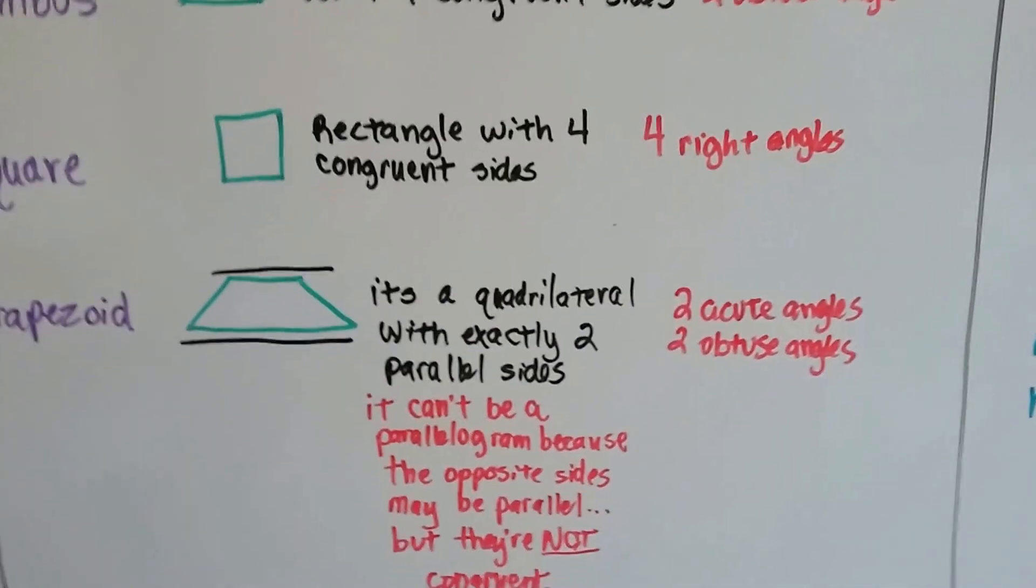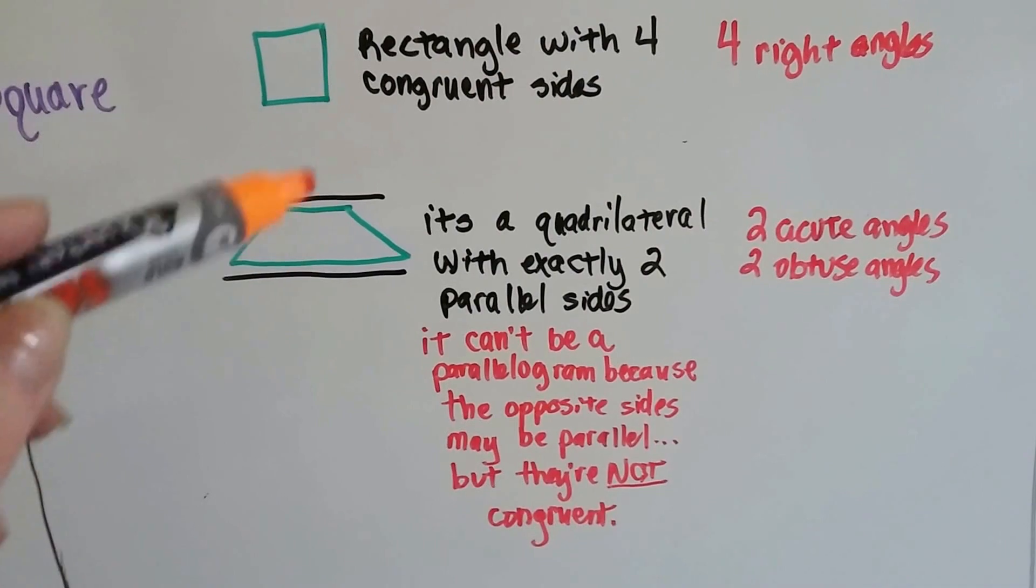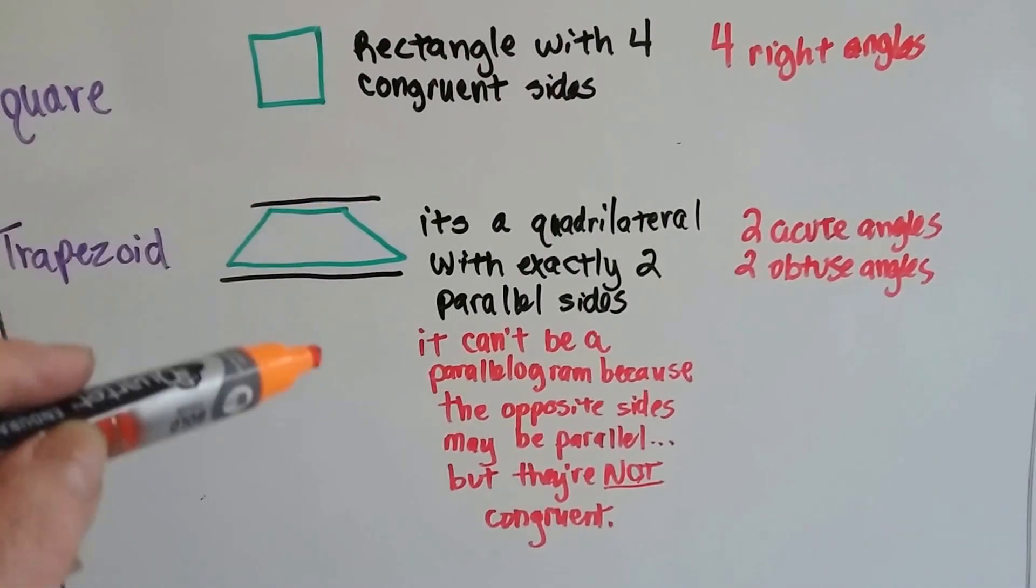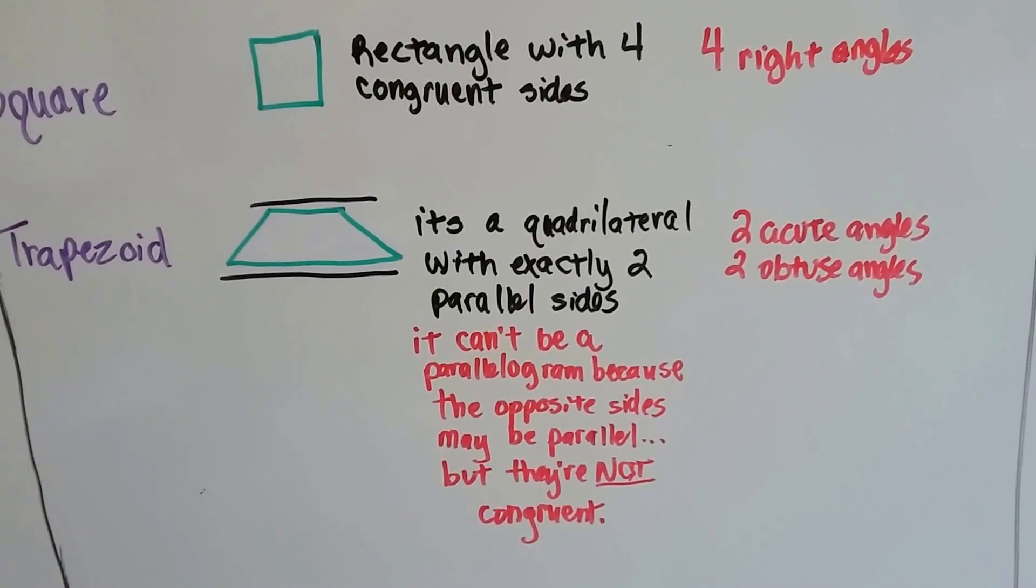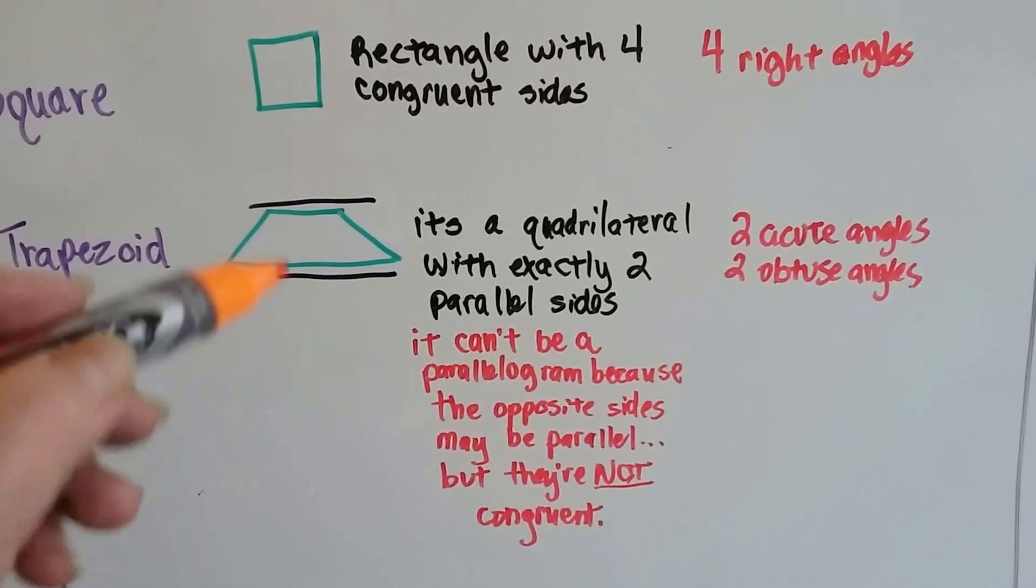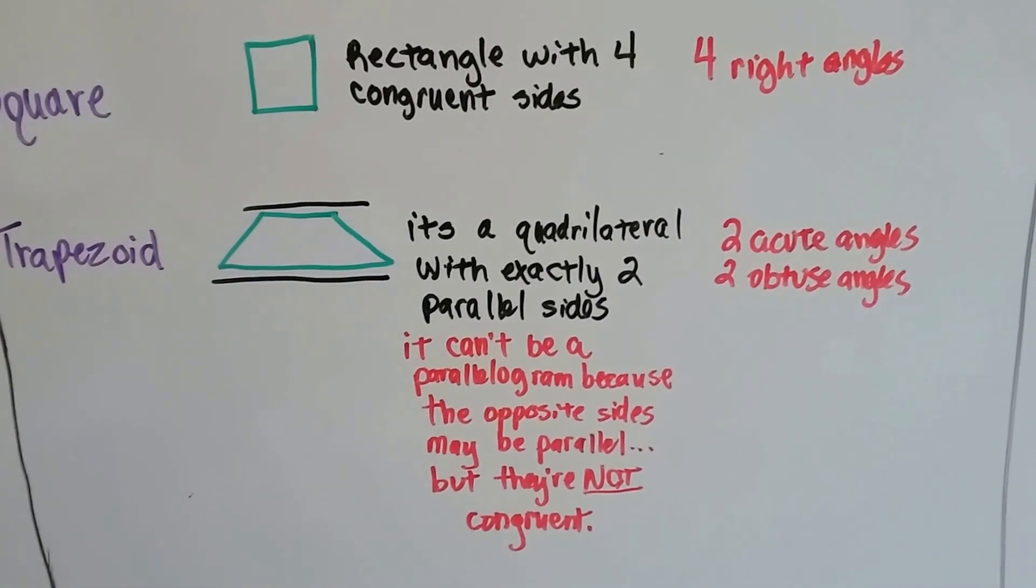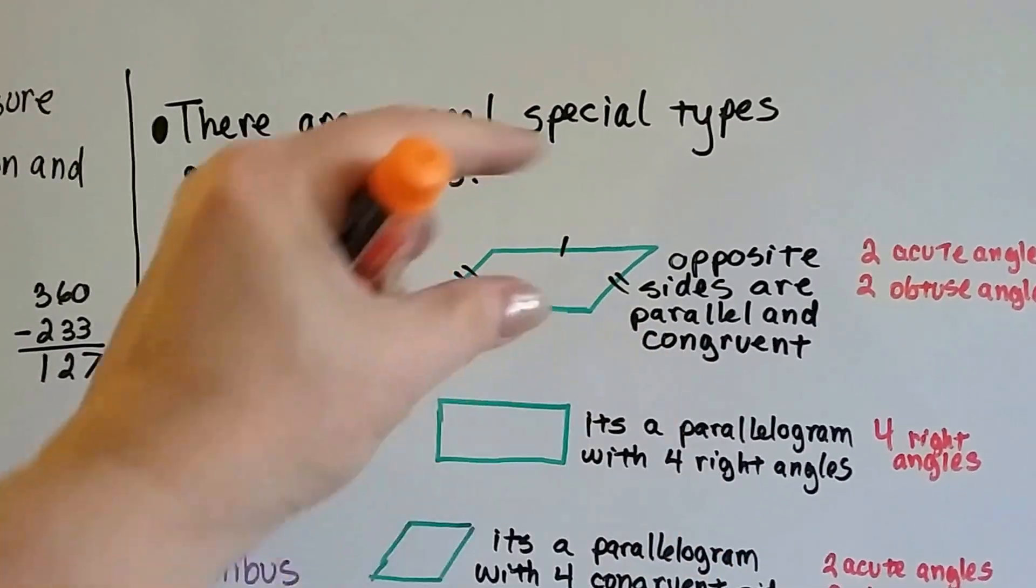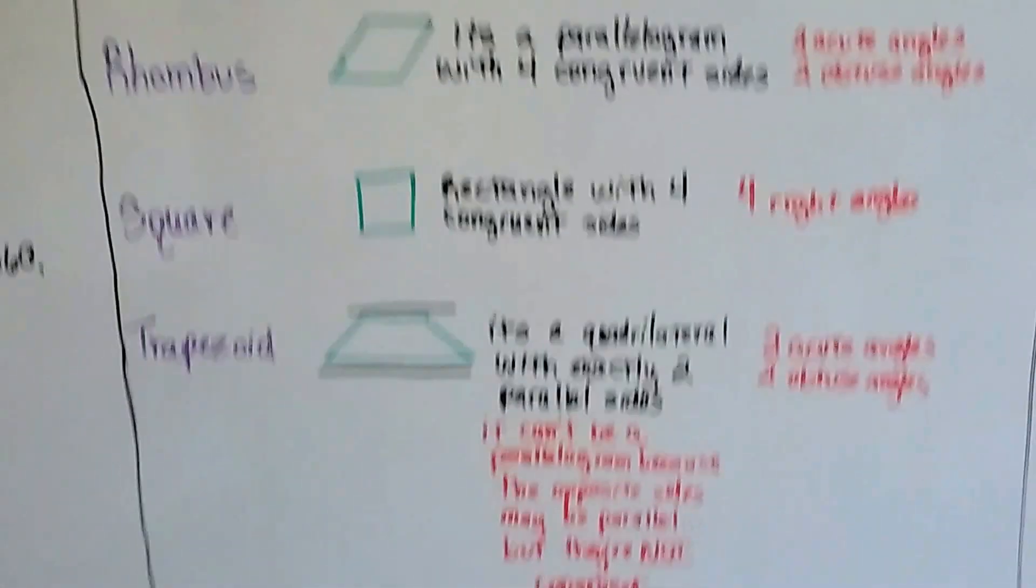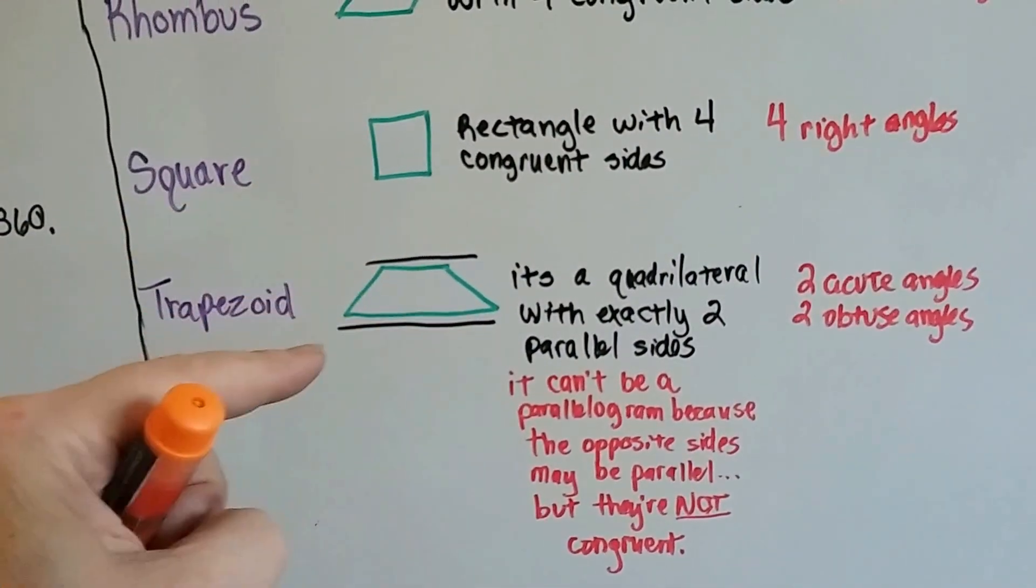And then the trapezoid is kind of out by itself. It's a quadrilateral with a pair of parallel sides, two parallel sides, but it can't be a parallelogram because the sides are not congruent. This side is not the same length as this side. See that? Those aren't congruent, and that's the rule. In order to be a parallelogram, the sides are parallel and congruent, the same length. These two sides are not the same length. This is a little short guy, and that's a real long guy.